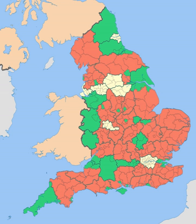Borough and district councils are responsible for local planning and building control, local roads, council housing, environmental health, markets and fairs, refuse collection and recycling, cemeteries and crematoria, leisure services, parks, and tourism.